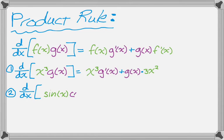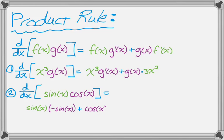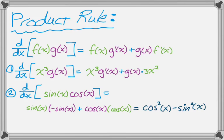Let's look at the derivative of sine of x times cosine of x. It's a product, so it's going to be the first, sine of x, times the derivative of the second — the derivative of cosine is negative sine. Plus the second, cosine of x, times the derivative of the first — the derivative of sine is cosine. That gives us cosine squared minus sine squared, and if you remember, cosine squared minus sine squared is actually cosine of 2x. So that's kind of interesting — we'll return to that idea a little later.